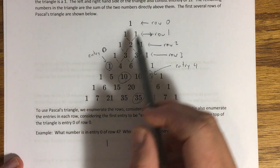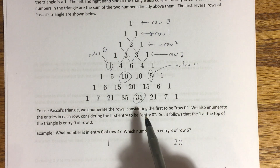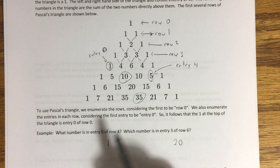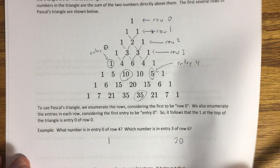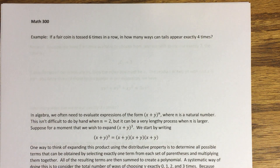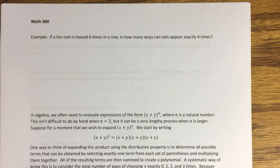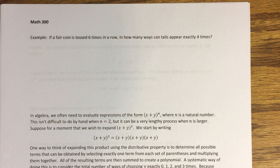But if you have Pascal's triangle in front of you and you already have the row you need, or if you're doing a problem where you need an entire row's worth of combinations, Pascal's triangle is really handy. Let's do an example: a fair coin is tossed six times in a row. In how many ways can tails appear exactly four times? We want to think of this in terms of combinations.